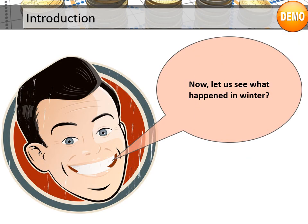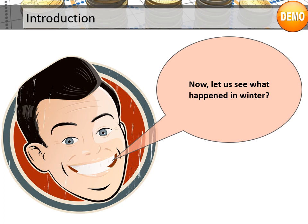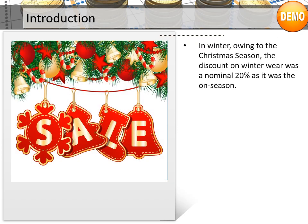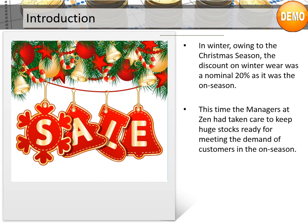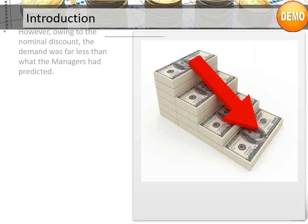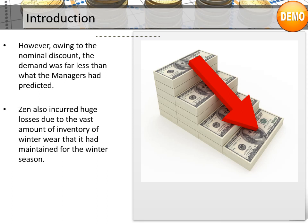Now, let us see what happened in winter. In winter, owing to the Christmas season, the discount on winter wear was a nominal 20%, as it was the on-season. This time, the managers at Zen had taken care to keep huge stocks ready for meeting the demand of customers in the on-season. However, owing to the nominal discount, the demand was far less than what managers had predicted. Zen also incurred huge losses due to the vast amount of inventory of winter wear that it had maintained for the winter season.